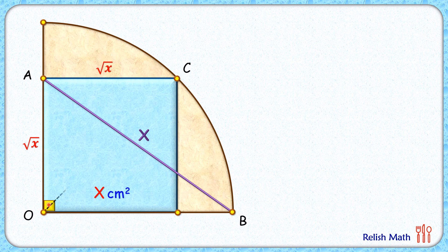Let's join OC. OC is the diagonal of the square and by formula the length of OC will be root 2x. OC is also the radius of the quadrant, thus OB length will be same, root 2x.